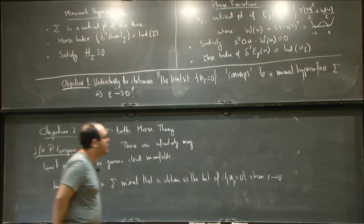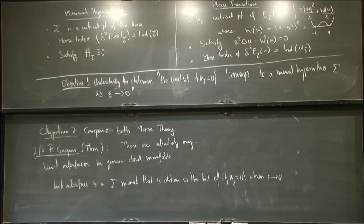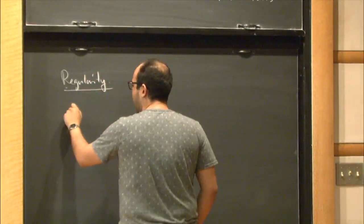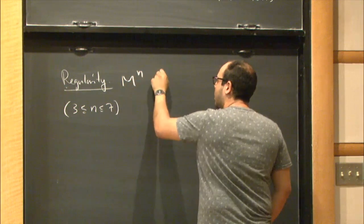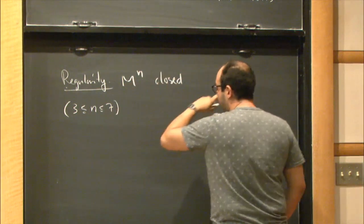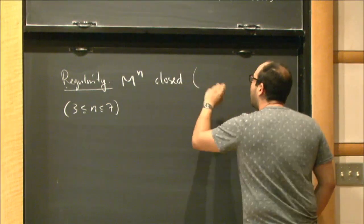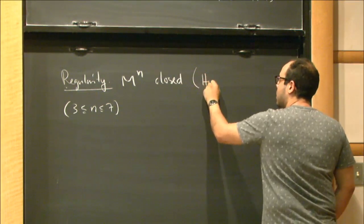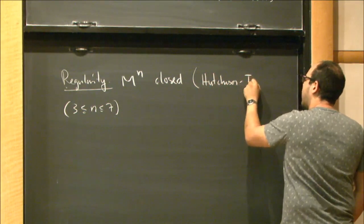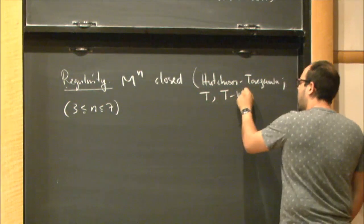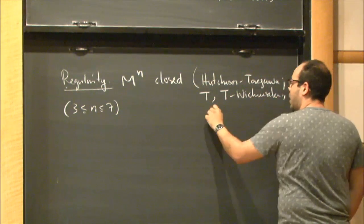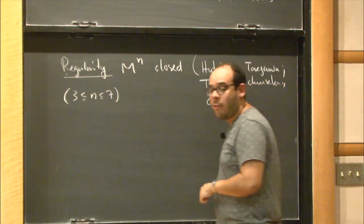So let me see about the regularity. So the regularity for dimensions 3 between n closed, so the dimensions between 3 and 7, one can prove the following. So this is the work of many people. I'm just going to mention a few names. So Hutchinson and Tonegawa, they first studied these in a very generic case. Then there is papers by Tonegawa, and Tonegawa, Rika Masakera, and myself, that if you put them together, you can prove the following statement.